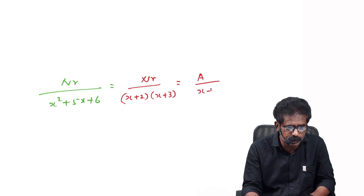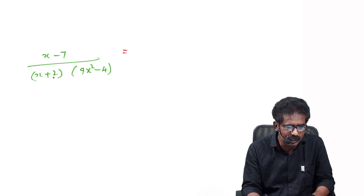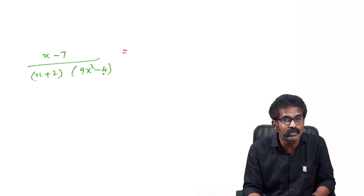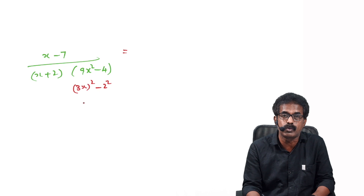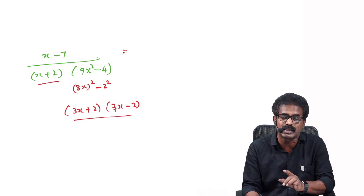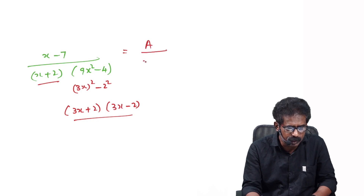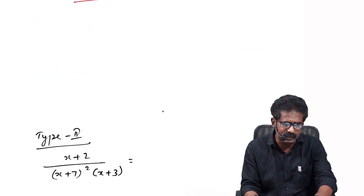Consider (x−7) over (x+2)(9x²−4). Is this the first type? The second factor 9x²−4 can be factorized as (3x+2)(3x−2) using the difference of squares. So the denominator is the product of three factors, making this first type again. You write it as A/(x+2) + B/(3x+2) + C/(3x−2).